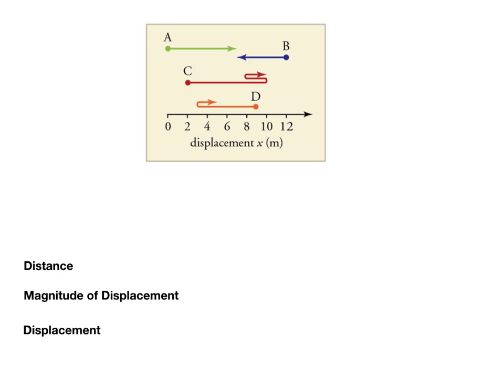On A here, the object starts its motion at position 0 but ends up at positive 7. There's only one motion — it doesn't change directions or anything — so the total distance traveled, if it starts at 0 and ends at 7, is 7 meters.